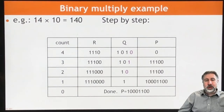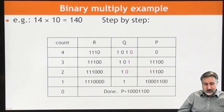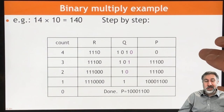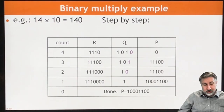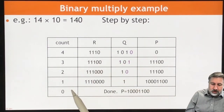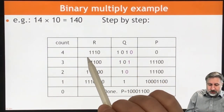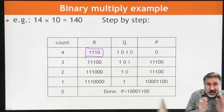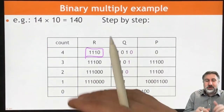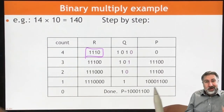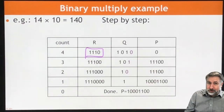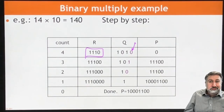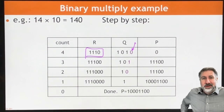Here's an example step by step. We're going to list the contents of three registers: R is the multiplicand, Q is the multiplier, and P is the partial product where our result is going. We're going to start with the same example — 14 times 10. We start with our multiplicand in the ones position, and each time we shift it we're basically multiplying it by two. So we add it to the ones position, the twos position, the fours position, and so on. We start in the ones position and check the ones position of the multiplier — it's zero, so we don't add.